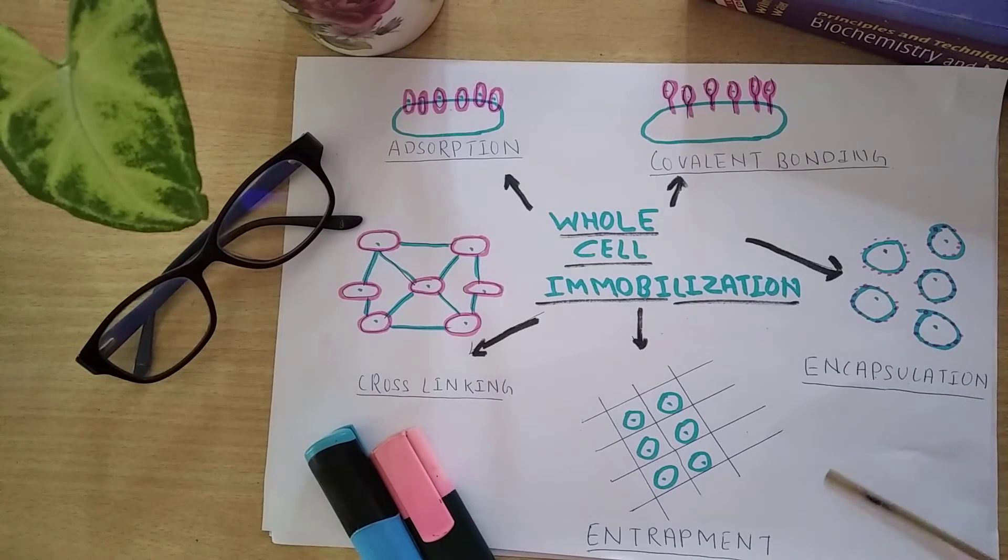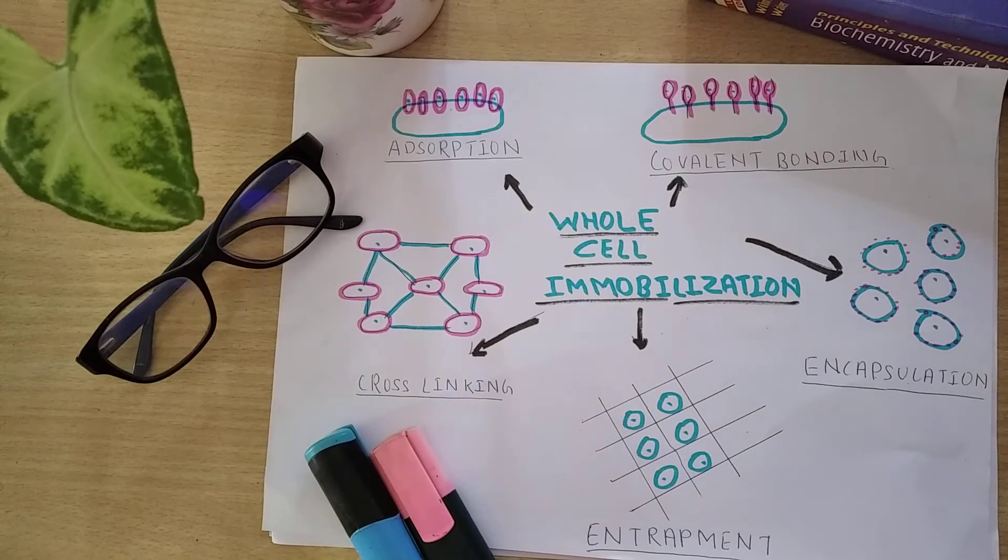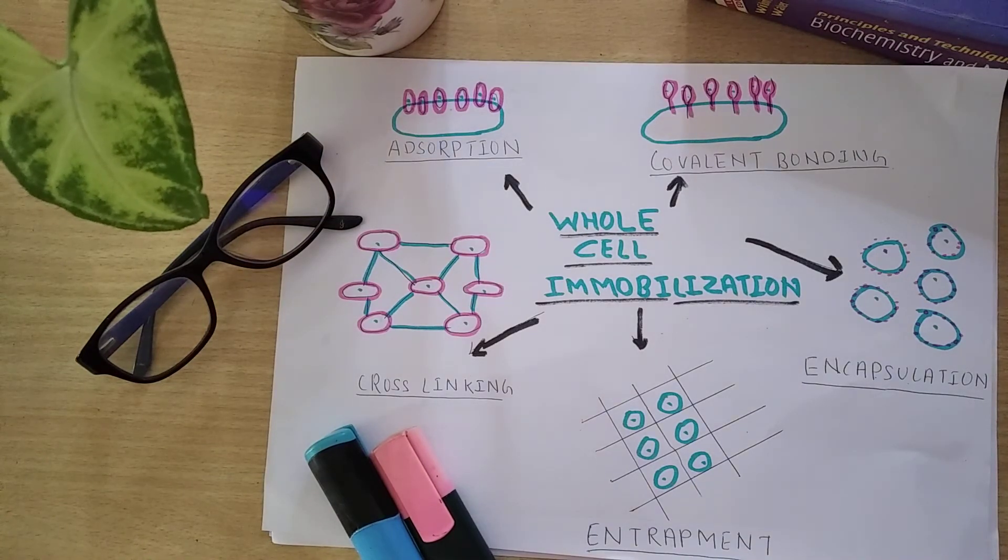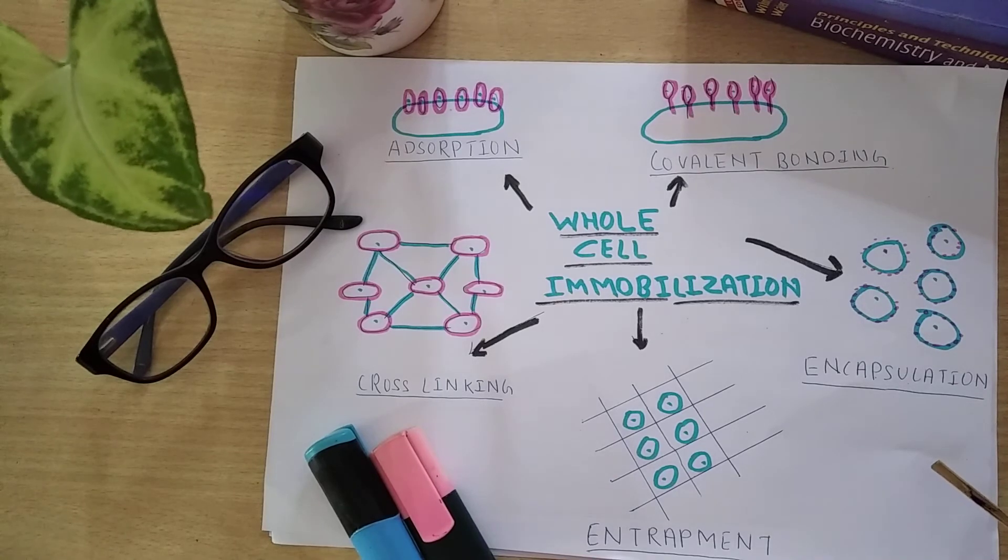in the gel - here enzymes are trapped inside the gel. Second is inclusion in fibers - here enzymes are supported on fibers made of matrix material. Last is inclusion in macro capsules - here enzymes or cells are entrapped in macro capsules formed by